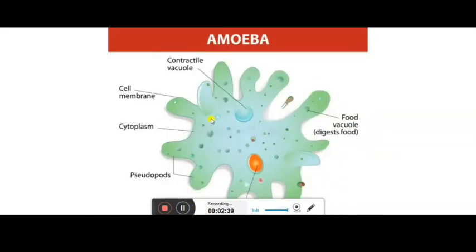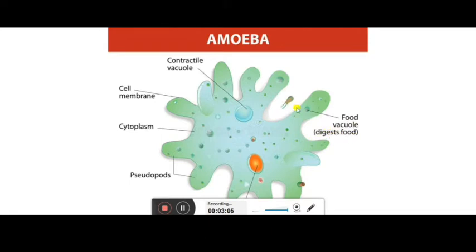This is the structure of amoeba. It has different features: a contractile vacuole, cell membrane, cytoplasm, and pseudopods — these are the pseudopodia, the false feet, which is why amoeba can change their shape. Food vacuoles digest food. The contractile vacuole and nucleus of the amoeba are also present.